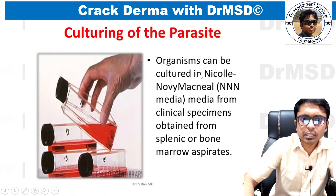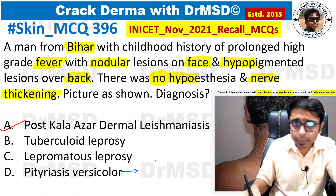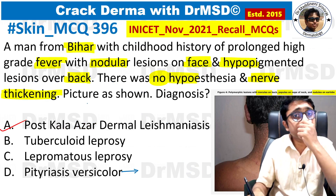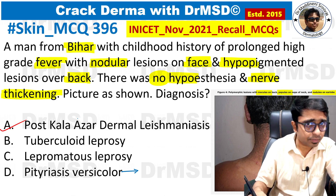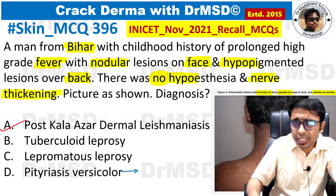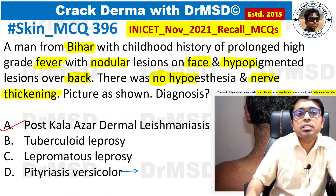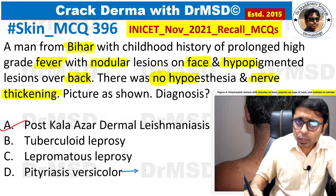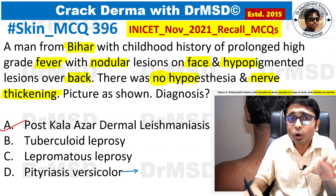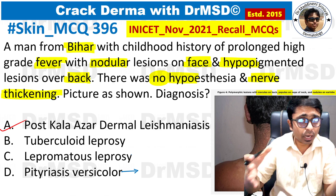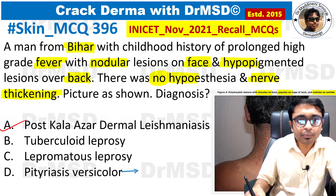One option in this question is Pityriasis versicolor — previously called Tinea versicolor, caused by Malassezia globosa or Malassezia furfur. For Pityriasis versicolor, there is no need to mention Bihar, no nodular lesions, and no history of fever. The patient will only present with hypopigmented macules which are perifollicular and can coalesce to form larger patches.